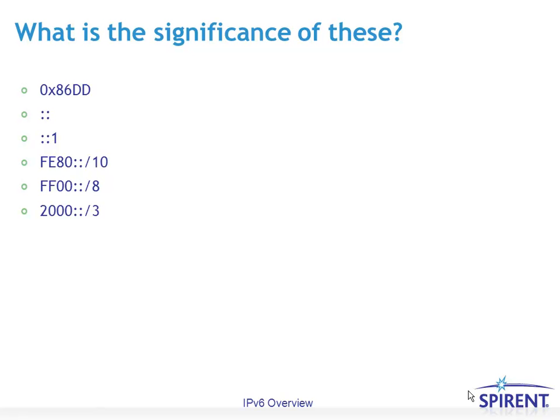2000 colon colon slash 3 is the IPv6 global unicast prefix base — basically the block of IPv6 addresses that are being handed out and considered globally unique. Protocol number 58 is the IPv6 next header value for ICMPv6. IPv6 addresses have 128 bits, so 2 to the 128th equals approximately 3.4 times 10 to the 38th — that is the total number of IPv6 addresses available, as opposed to 4.2 billion with IPv4.